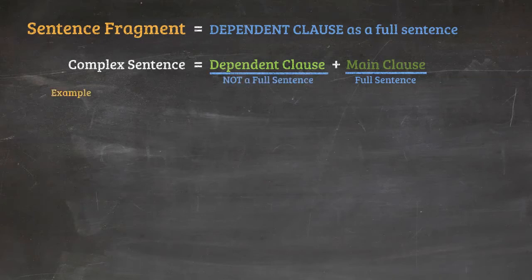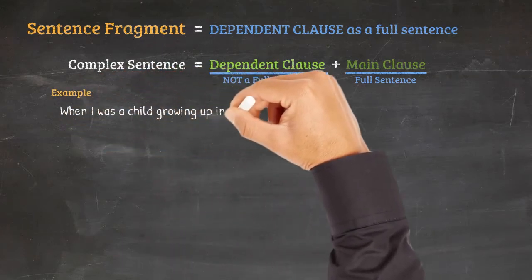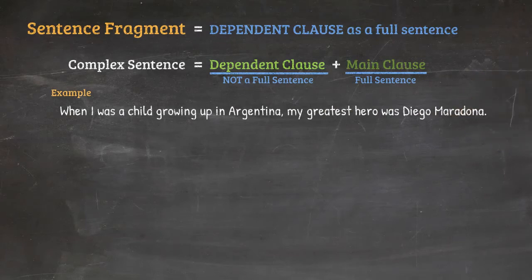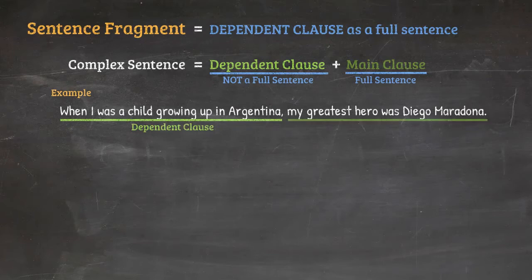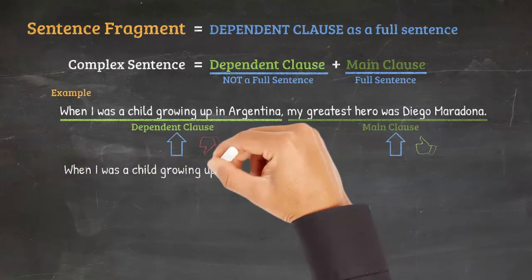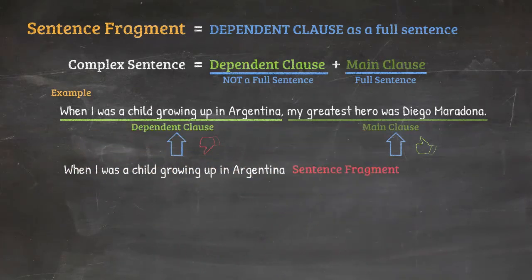So if we have something like this: 'When I was a child growing up in Argentina, my greatest hero was Diego Maradona.' 'When I was a child growing up in Argentina' is the dependent clause, and 'my greatest hero was Diego Maradona' is the main clause. So the main clause can stand by itself — that's fine. But the dependent clause cannot stand by itself. If we just wrote 'when I was a child growing up in Argentina,' it would be a sentence fragment.